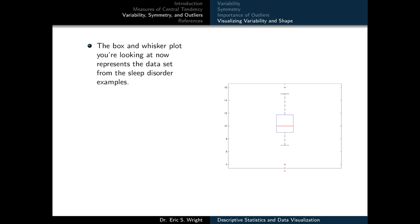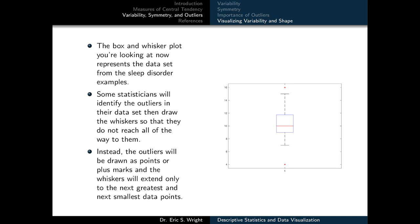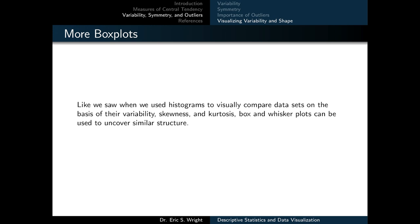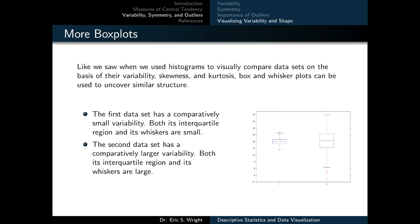The box and whisker plot shown now represents the dataset from the sleep disorder examples. Some statisticians identify outliers and draw the whiskers so they do not reach all the way to them; instead outliers are drawn as points or plus marks, and the whiskers extend only to the next greatest and next smallest data points. Box and whisker plots can be used to uncover variability, skewness, and kurtosis. The first dataset in our comparison has small variability — both its interquartile region and whiskers are small — while the second dataset has larger variability with a larger interquartile region and longer whiskers.